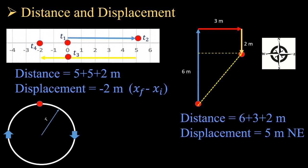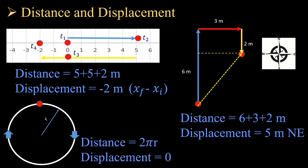In example 3, a particle moves in a circle and completes one full revolution. The total distance traveled is the circumference, 2πr. The net displacement is zero because the starting position and ending position are the same. We can conclude that total distance is always a positive quantity, whereas displacement can be negative, positive, or zero.